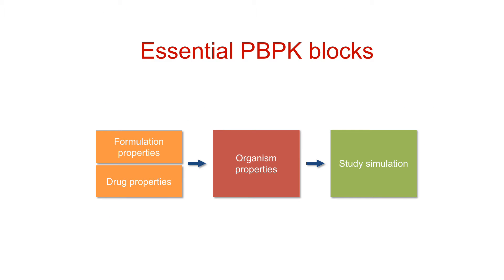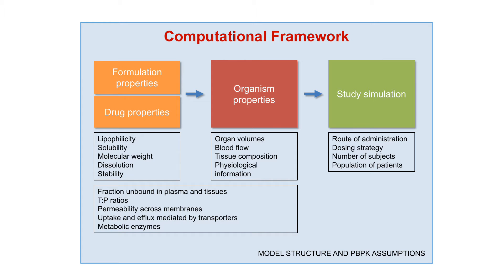PK is based essentially on three blocks: properties related to drug and formulation; factors related to the organism and individual or population of patients that we are interested to simulate pharmacokinetics in; and all the settings related to route of administration, dosing intervals, and the type of simulated clinical studies that we are interested to predict. All of these elements are embedded in a computer-based computational framework that will have a certain structure as well as assumptions for the simulation of pharmacokinetics.